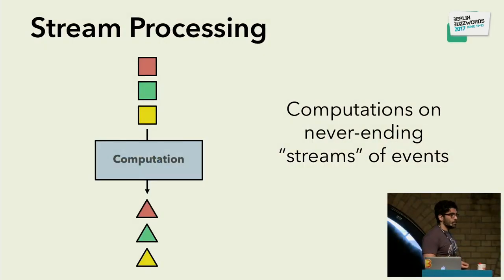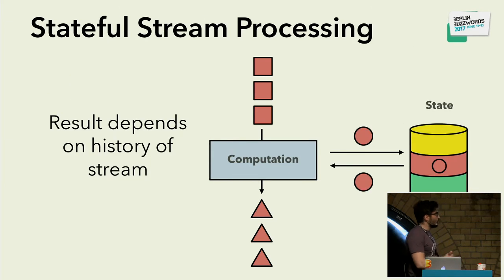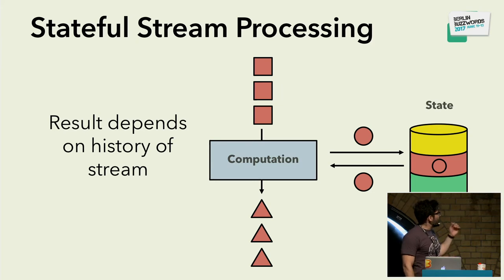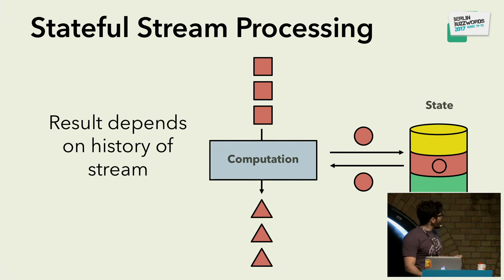What is stream processing, or why is a stream processor a good substrate for building a CEP library? Stream processing in its simplest form is computation on a never-ending stream of data arriving continuously — you cannot wait until you have gathered it all. Distributed stream processing spreads this computation across many machines. Stateful stream processing, the most interesting case, means the result of your computation depends also on the history of your stream — think of a counter. This is where Flink shines, and that's why we chose to build a CEP library on top of it.